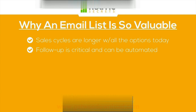Those emails would go out 365 days after someone opts into your list — one a week, one every two days, one every other week — however you set them up. Being able to automate email follow-up is critical for a couple of different reasons.